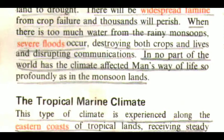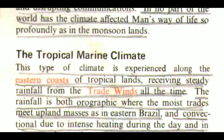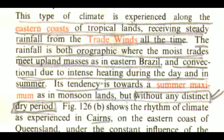The Tropical Marine Climate. This type of climate is experienced along the eastern coasts of tropical lands, receiving steady rainfall from the trade winds all the time. The rainfall is both orographic, where the moist trades meet upland masses as in eastern Brazil, and convectional due to intense heating during the day and in summer. Its tendency is towards a summer maximum, as in monsoon lands, but without any distinct dry period.